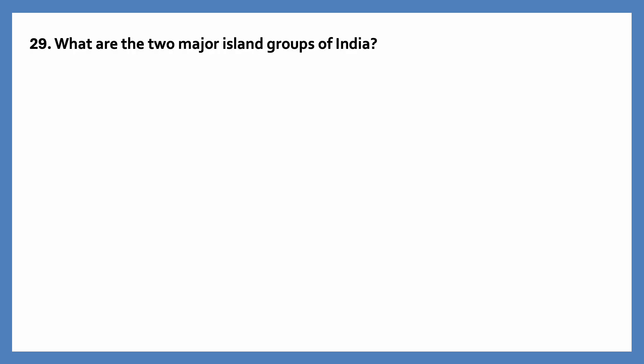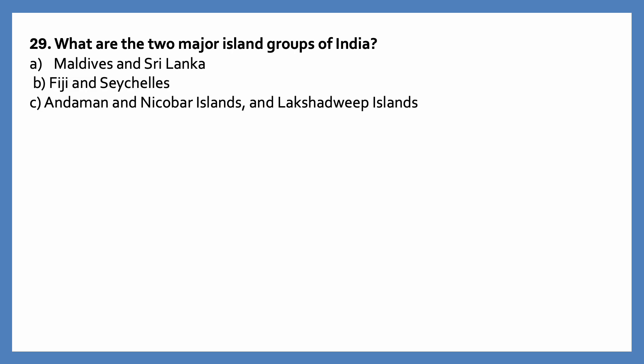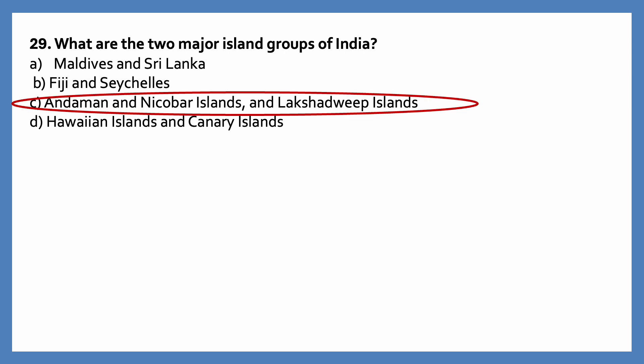What are the two major island groups of India? Options are: Maldives and Sri Lanka; Fiji and Seychelles; Andaman and Nicobar Islands and Lakshadweep Islands; Hawaiian Islands and Canary Islands. The correct answer is Andaman and Nicobar Islands and Lakshadweep Islands.